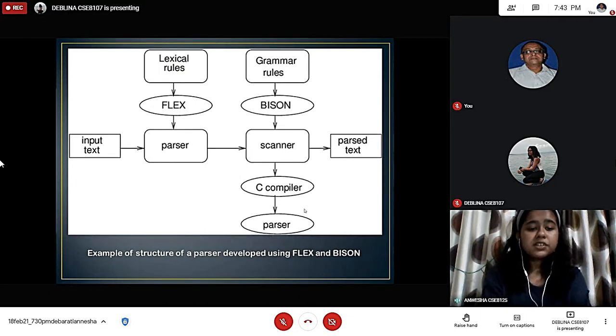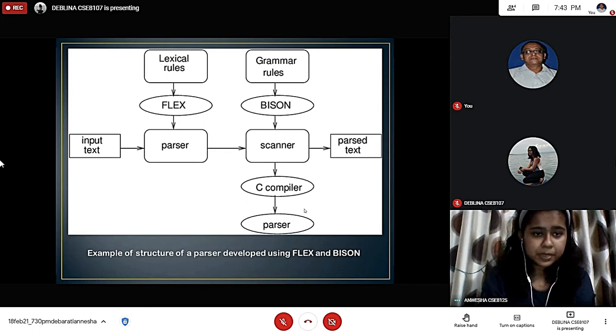Here is an example of a structure of a parser developed using flex and bison. First we get the input text, the lexical rules, and then the flex, and then it goes to the parser. From the parser, it goes into the scanner, then to the C compiler that goes as input to the parser. We have different paths through which we can reach our goal. We also have the grammar rules that enter into bison, which will further get into scanner, and then we follow the regular steps.